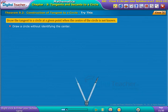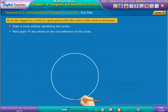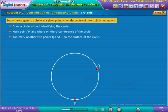Try the following steps to draw the tangent to a circle at a given point when the center of the circle is not known. Draw a circle without identifying the center. Mark point P anywhere on the circumference of the circle.